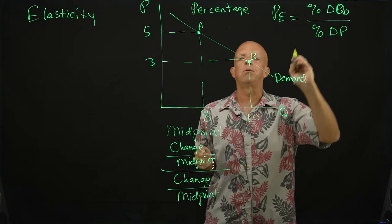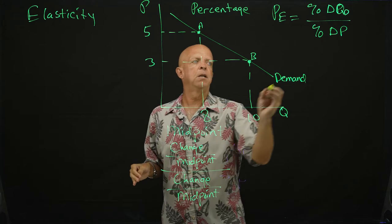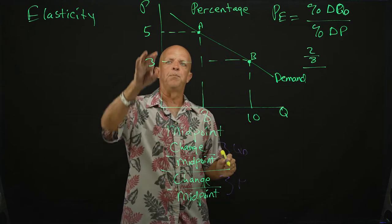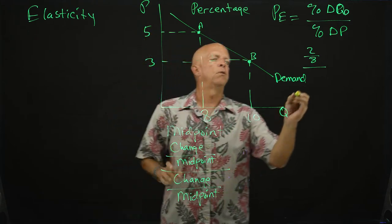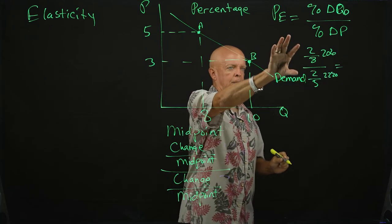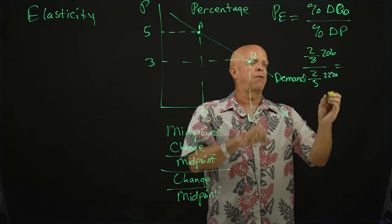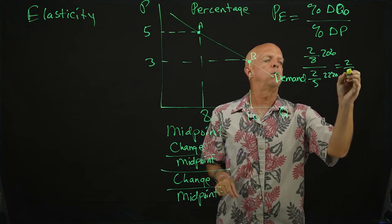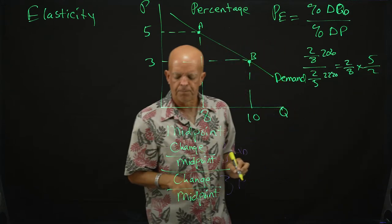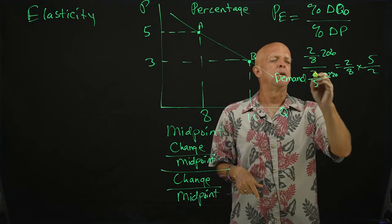If we were to do the percentage change in quantity demanded, it's going to be starting from this point, it's going to be two over eight, over two over five. But the big thing is, let's calculate this number right here. So when you have a fraction over a fraction, you can easily convert that to something easy like this: two over eight times five over two. You multiply by the reciprocal.